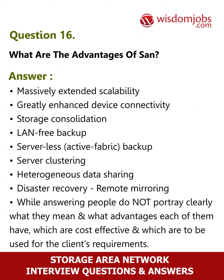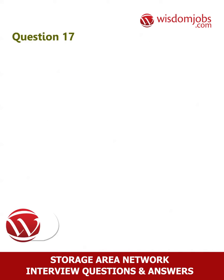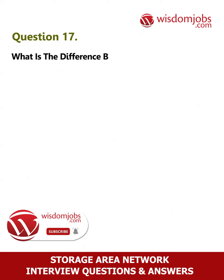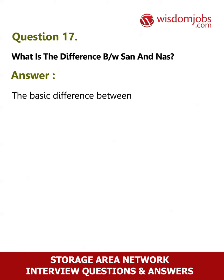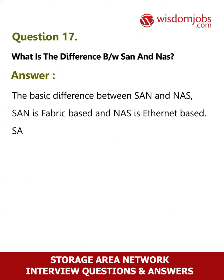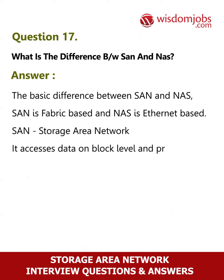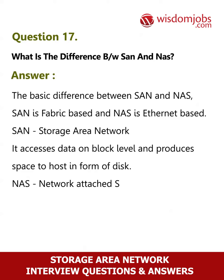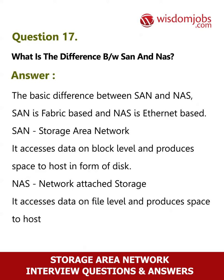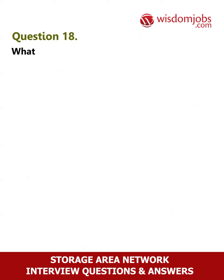Question 17: What is the difference between SAN and NAS? Answer: The basic difference is that SAN is fabric-based and NAS is ethernet-based. SAN (Storage Area Network) accesses data on block level and produces space to host in the form of a disk. NAS (Network Attached Storage) accesses data on file level and produces space to host in the form of a shared network folder.